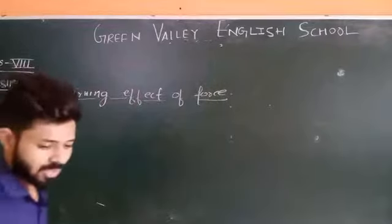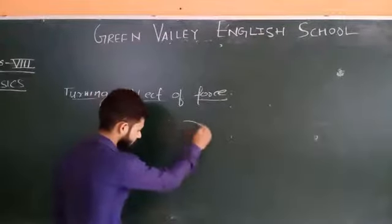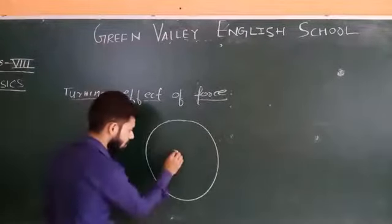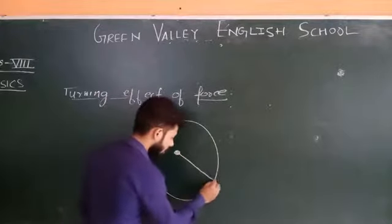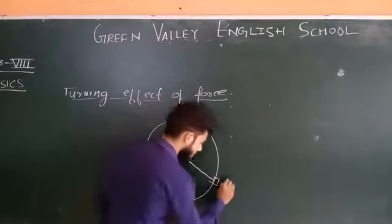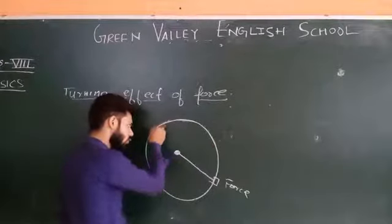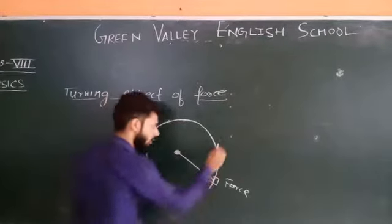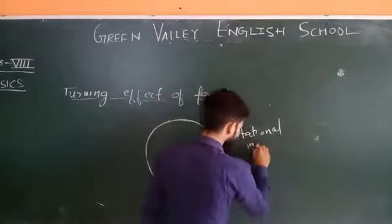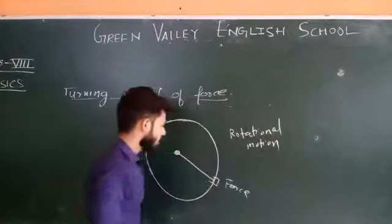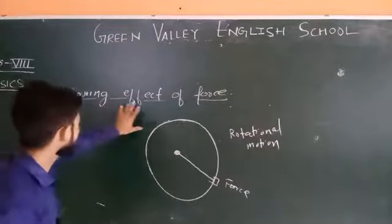Let us draw a diagram to understand this. Here the object is pivoted at this point. Applying a force — and due to this force, it starts rotation. This motion is rotational motion, not linear motion. The force which provides a rotational motion is called the turning effect of force. If this is the pivoted point — the fixed point — and if we draw a vertical axis through it, then this line is known as the axis of rotation.